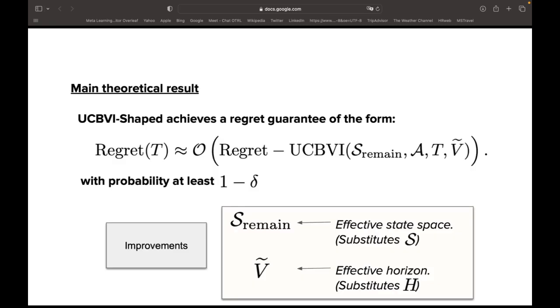Our main result characterizes the complexity of UCBBI Shaped. We show that with high probability the regret of UCBBI Shaped scales as the regret of UCBBI where the state dependence scales not with the size of the original state space, but with the size of an effective state space. Similarly, we can trade off some H factors in the horizon dependence of unshaped UCBBI with factors scaling with V tilde instead.